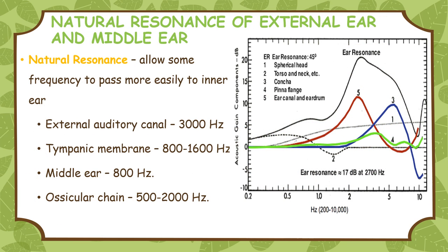Natural resonance of external and middle ear: due to inherent anatomic and physiological properties, the external and middle ear allow certain frequencies to pass more easily to the inner ear. The natural resonance of different structures: external auditory canal 3000 Hertz, tympanic membrane 800 to 1600 Hertz, middle ear 800 Hertz, ossicular chain 500 to 2000 Hertz. The greatest sensitivity of sound transmission is between 500 to 3000 Hertz, and these are the frequencies most important to humans in day-to-day conversation.